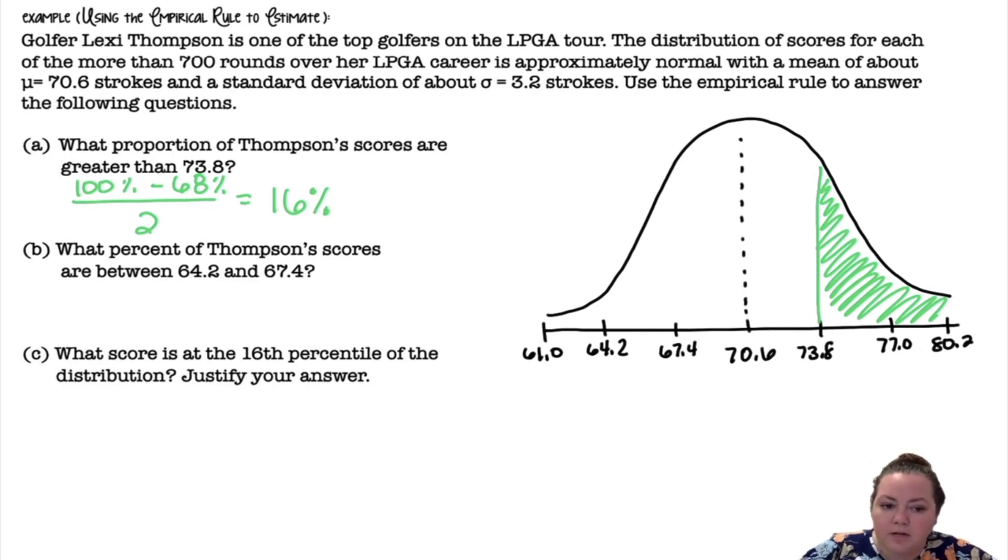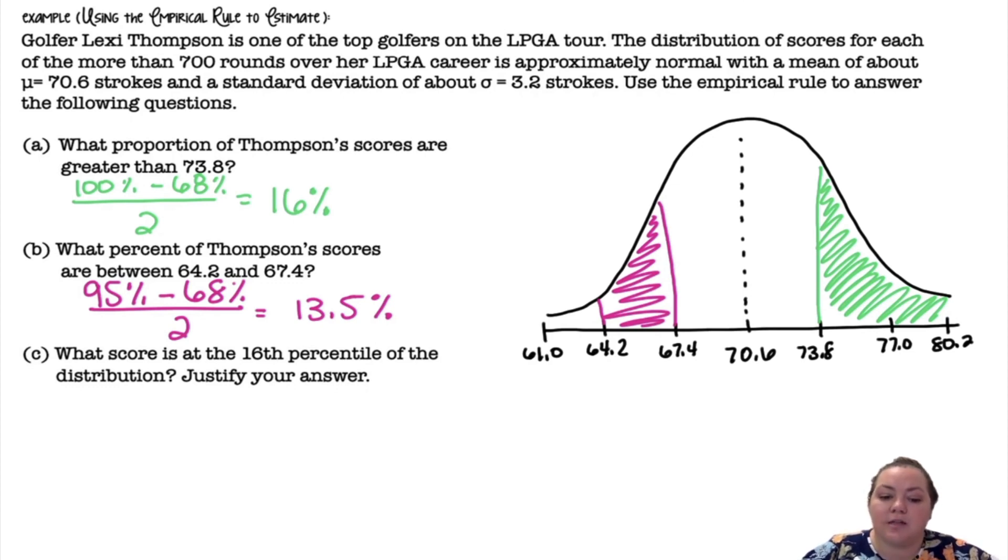What percent of Thompson's scores are between 64.2 and 67.4? So between those, I can go back and look and see exactly that it was 13.5. Or I could do 95 minus 68% divided by 2 and we get 13.5%.